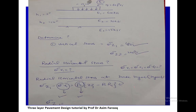For the radial stresses, the formula is: sigma Z1 minus sigma R1 equals load PC times (ZZ1 minus RR1), where ZZ1 minus RR1 is the combined influence factor. We consider both depth and offset in this portion, which is why we use both ZZ1 and RR1. The same approach applies at the second and third interfaces.